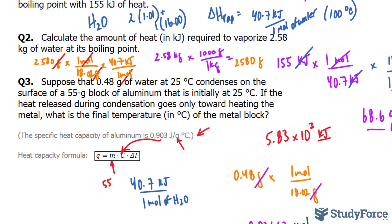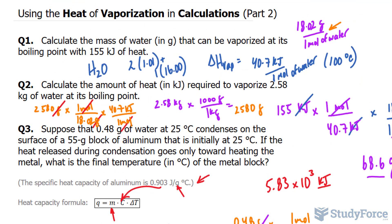So to conclude, the temperature of the block will be 46 degrees Celsius if 0.48 grams of water condenses at 25 degrees. And there you have it. That is how to use the heat of vaporization in calculations.